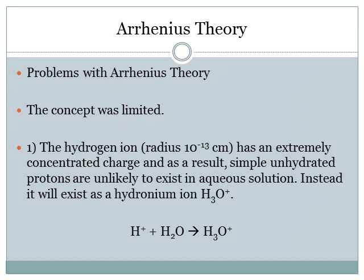But there are a number of problems with Arrhenius theory. The first was that the concept was actually quite limited. The hydrogen ions have a very small radius of 10 to the minus 13 centimetres. This is quite a concentrated charge, and as a result, you wouldn't typically find a H+ ion floating around in solution. It would quickly latch on to another water molecule, forming what is known as a hydronium ion, or H3O+.